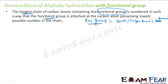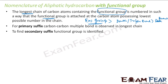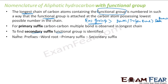The functional group should be given the lowest number, and the next priority is for the double and triple bond. The primary suffix for the carbon-carbon multiple bond is observed in the longest chain. Define the secondary suffix — the functional group is also identified. The name follows this fashion: the prefix, where the functional group lies, the word root, the primary suffix, and the secondary suffix. This is the naming convention method.